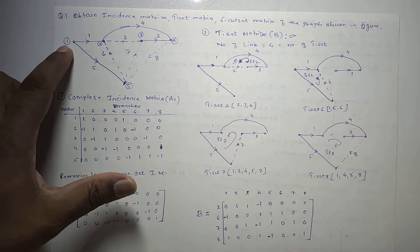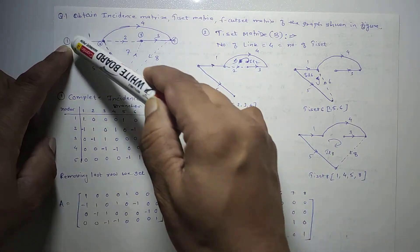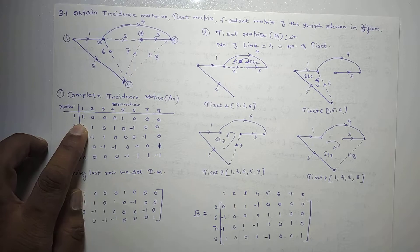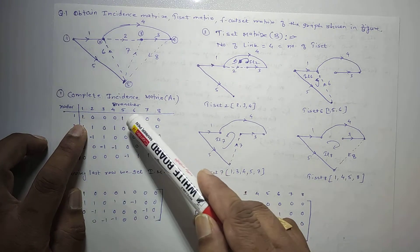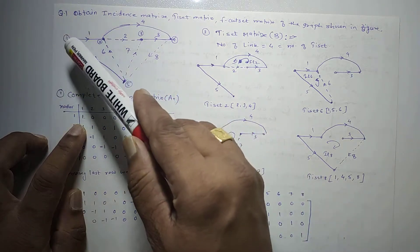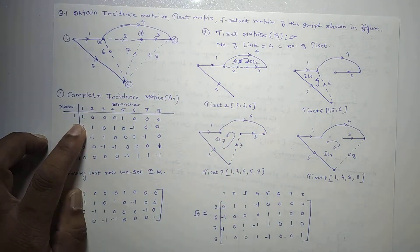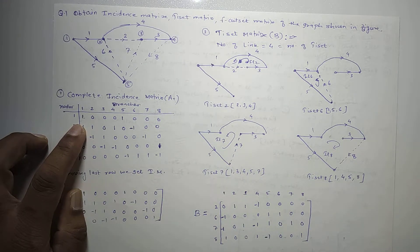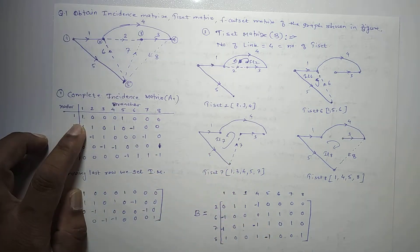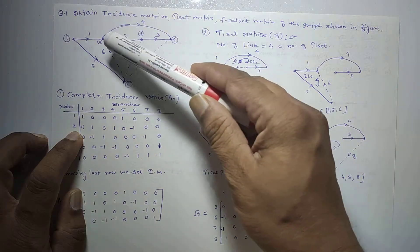For node number 1, branches 1 and 5 are connected. So positions 1 and 5 in the matrix get a 1, and the remaining entries are replaced by zeros. Leaving from a node is considered positive orientation in the incidence matrix, and entering towards the node is considered negative. Branch 1 and branch 5 are both leaving from node 1, so both are positive.